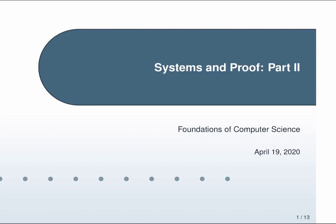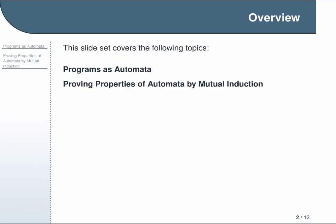This is yet another video in the Systems and Proof module for Foundations of Computer Science. In this half of the module we have two topics left to cover. The first, which we'll look at in this video, is just a very minimal introduction to the idea of automata as a way of modeling computation. The second, which we'll cover in a subsequent video, will be a walkthrough of a proof by weak mutual induction of a very simple property of one of the simplest possible automata.